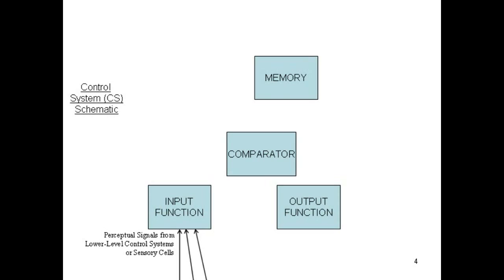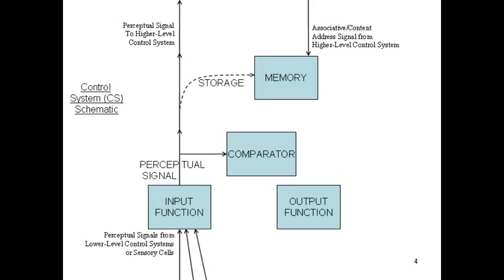The input function receives perceptual signals from one or more CSs lower in the hierarchy or from sensory cells, and consolidates those signals, producing its own perceptual signal, which it sends to the comparator and passes on to a higher level CS while storing some of it in memory. From time to time, memory receives an address signal from a higher level CS's output function, determines the best matching reference standard, and sends that to the comparator.